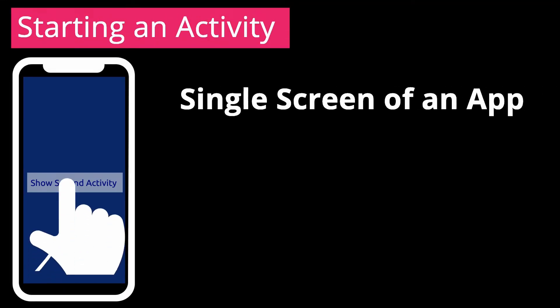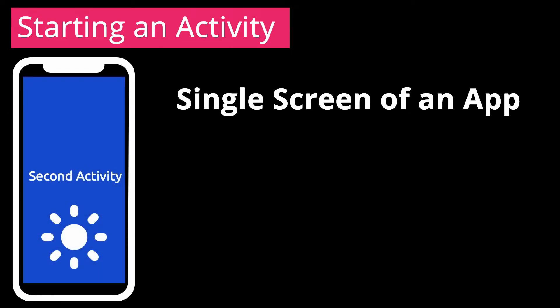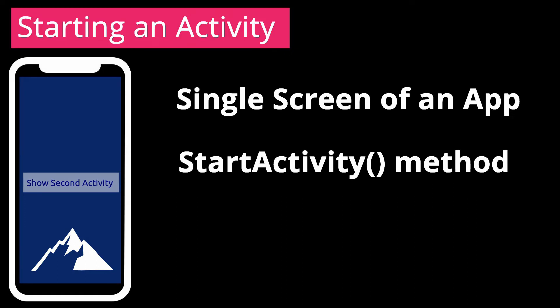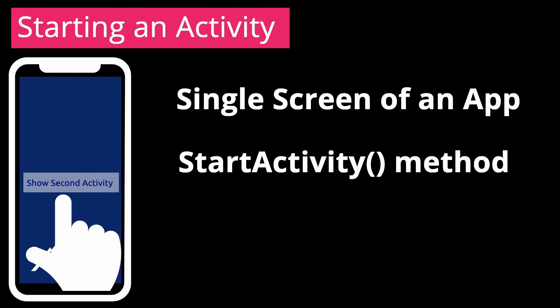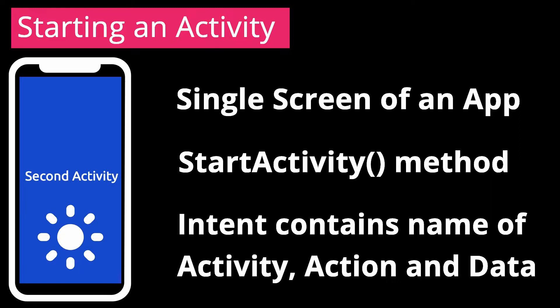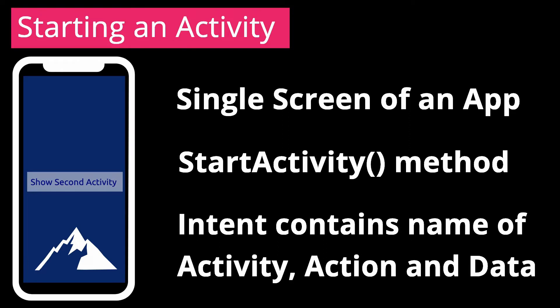An activity represents a single screen in an app. You can start a new instance of an activity by passing an intent to the startActivity method. The intent describes the activity to start and carries any necessary data to be transmitted to the opened activity.